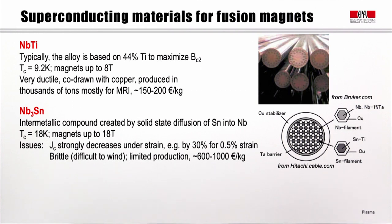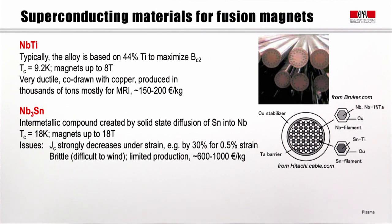The second material is niobium-3-tin (Nb₃Sn), an intermetallic compound created by solid-state diffusion of tin into niobium. It has a critical temperature of 18 Kelvin, and magnets can reach up to 18 Tesla — very interesting for fusion. However, its critical current density strongly decreases under strain: 0.5% strain reduces it by 30%. It is very brittle, difficult to wind into coils, and has a limited production, costing around 600 to 1000 euros per kilogram.